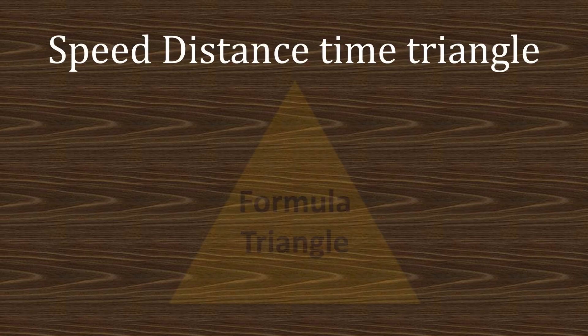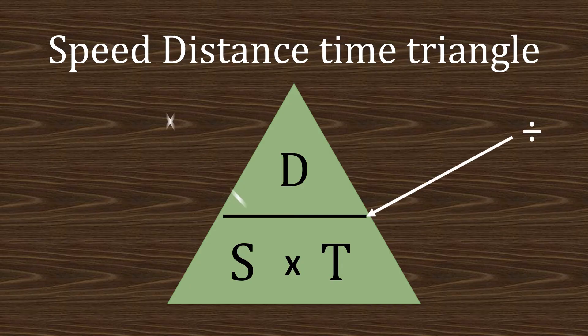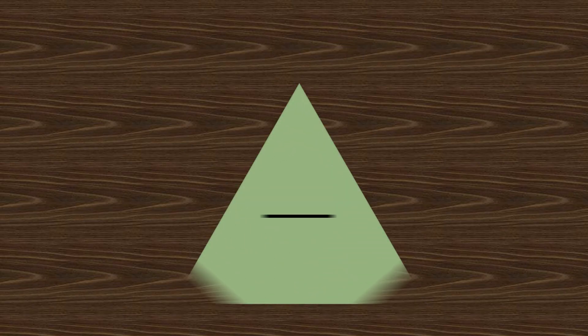So speed, distance and time, we need to learn the formula. So we have distance at the top and then speed multiplied by time. Now this line means divide obviously and this means multiply. So let's remember the formula triangle.